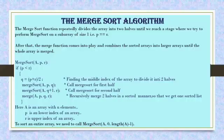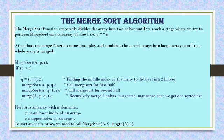The merge sort function repeatedly divides the array into two halves until we reach a stage where we try to perform merge sort on a sub-array of size one, that is p equals r. After that, the merge step combines the sorted arrays into larger arrays until the whole array is merged. To call merge sort, we pass three parameters: A is the array name, p is the first index, and r is the last index.